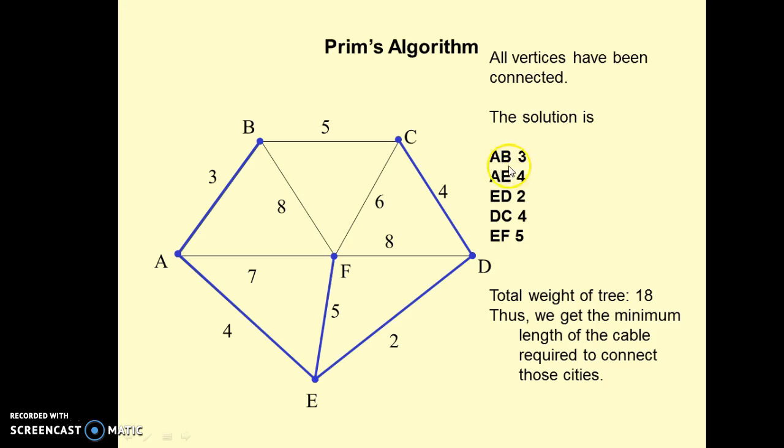So the solution is: AB is 3, AE is 4, ED is 2, DC is 4, EF is 5. The total weight of this minimum spanning tree is 18. Thus, we get the minimum length of cable required to connect those cities.